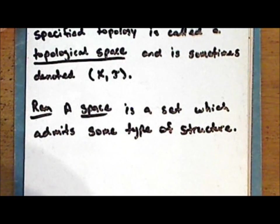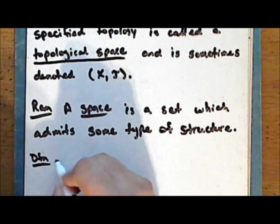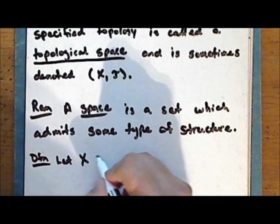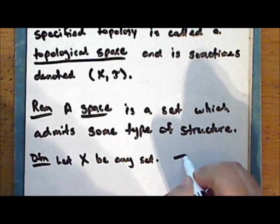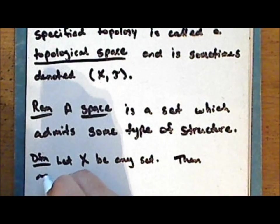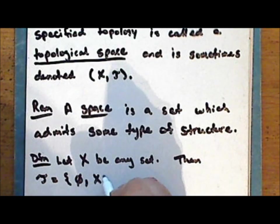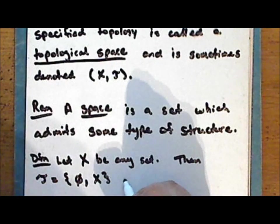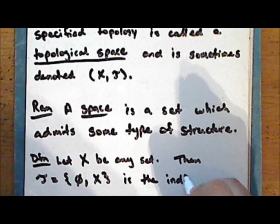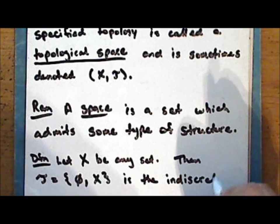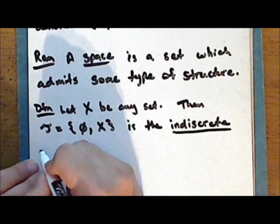Now we're ready to consider some examples of topologies. Let X be any set. Then the collection tau consisting of the empty set and the entire set only is the indiscrete topology on the set X.